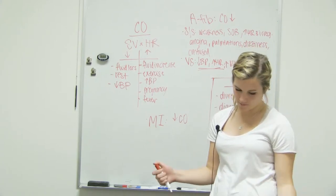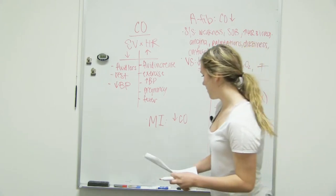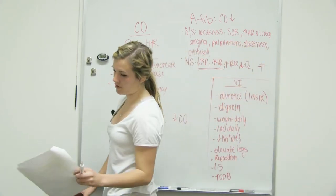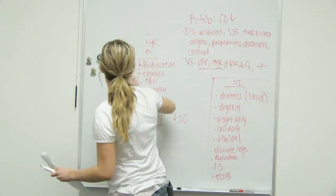So basically what you want to know for that one, super easy, hypertension. And hypertension is 140 over 90. That's when it's classified.